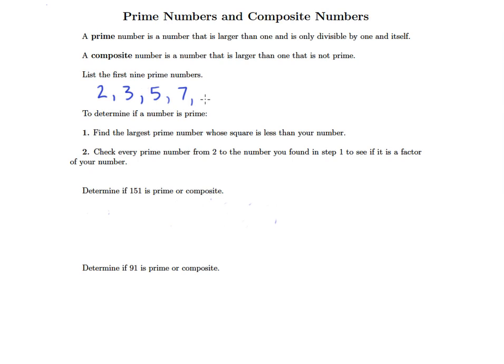Is nine prime? Well, three goes into nine evenly - three times three is nine - so nine is composite. We of course skip 10. How about 11? 11 is prime because only one and 11 go into it. 13 is also prime. Only one and 13 are factors.